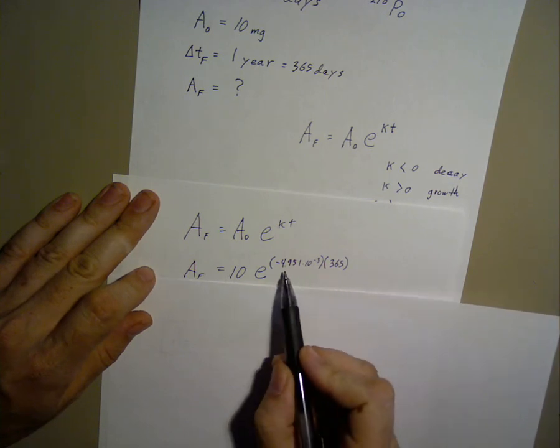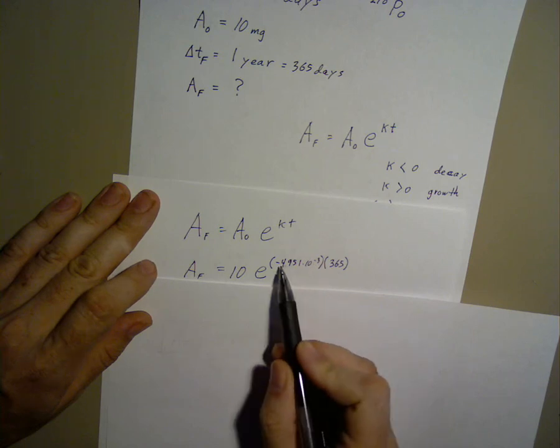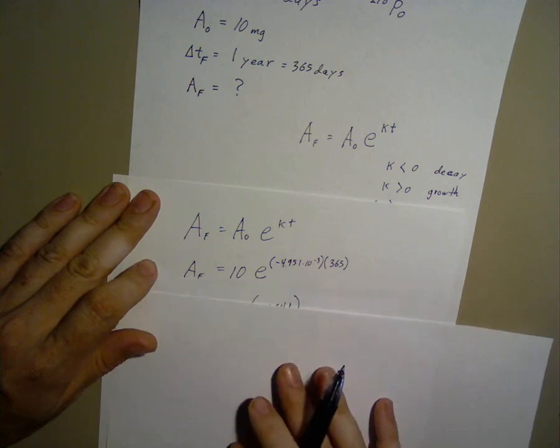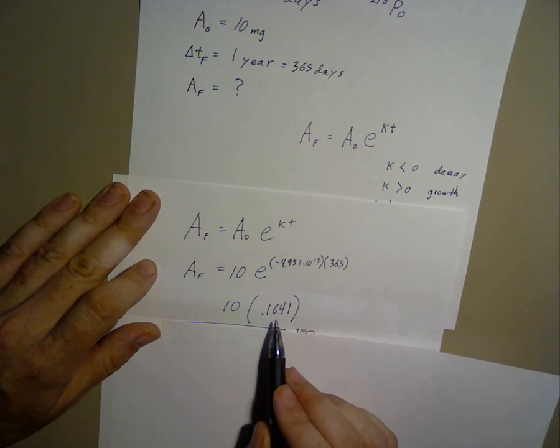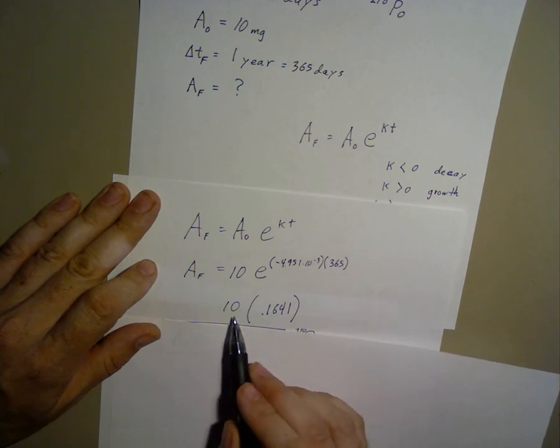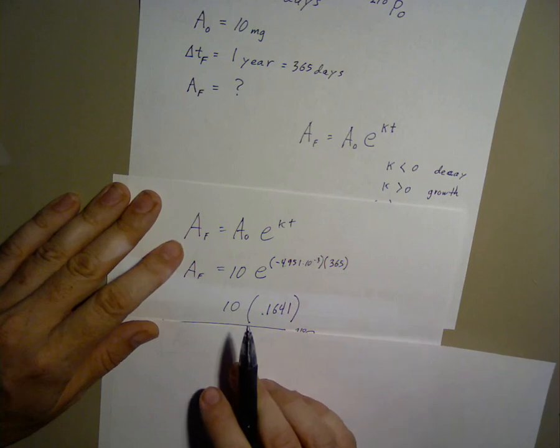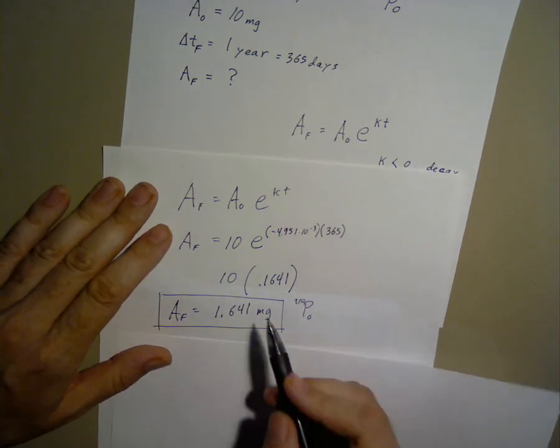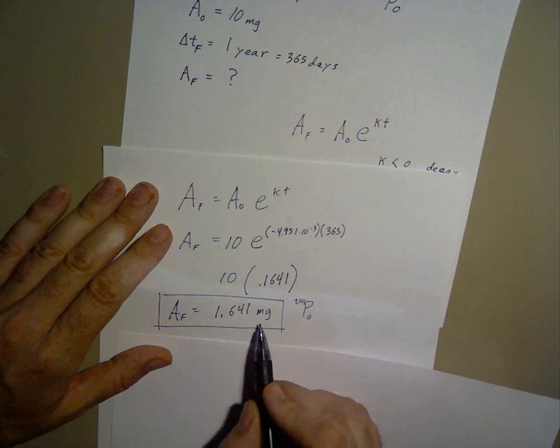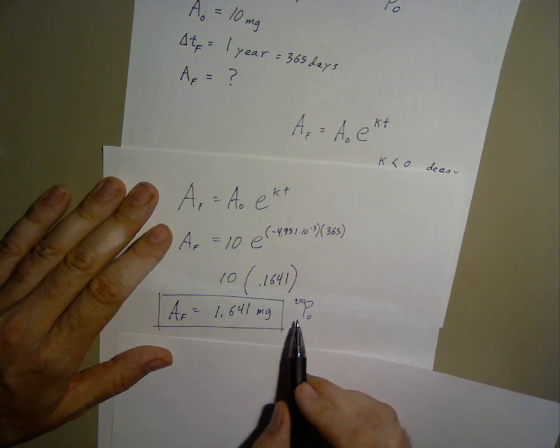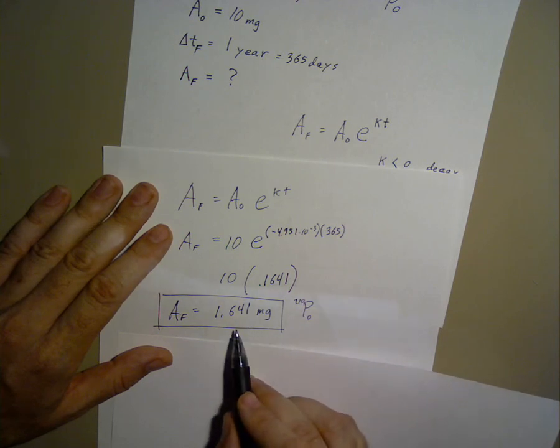So first we solve what the exponent is and take e to that power. We get 0.1641, times 10. 10 times that gives us a final amount of 1.641 milligrams of polonium-210. So after a year, this is all that we have left. It is a short-lived material.